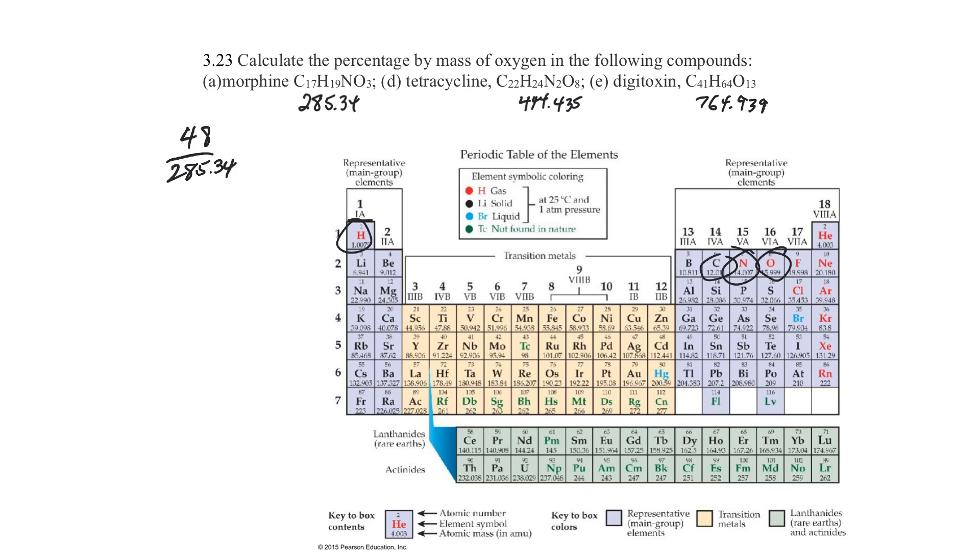When you divide that, you're going to get a decimal, and then that decimal is simply multiplied by 100%. So your decimal is going to be 0.168, and so that will be 16.8%, and that is your answer for A, 16.8% oxygen in that compound.